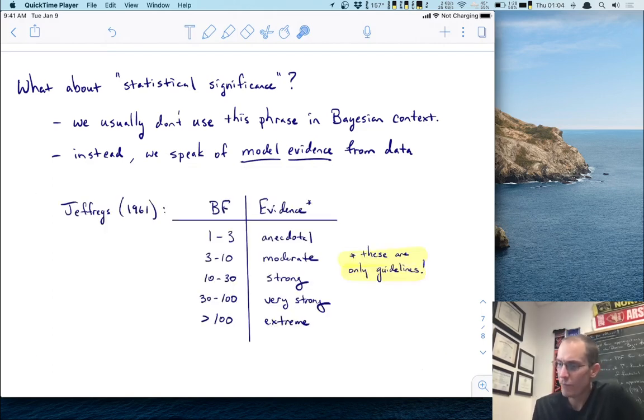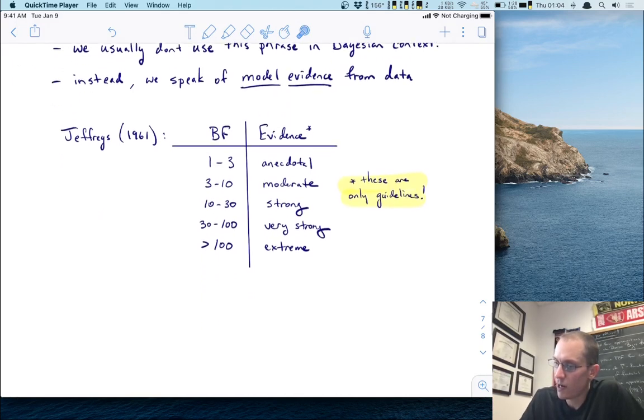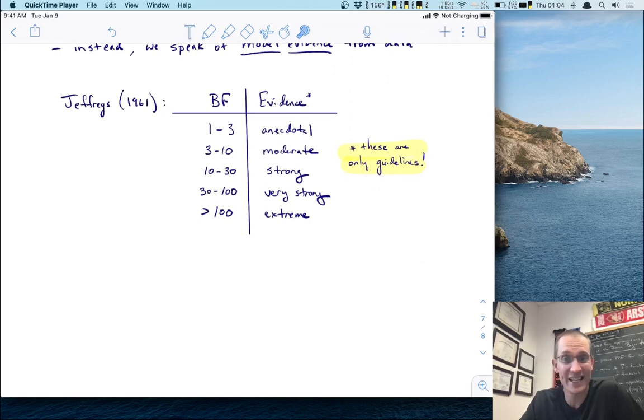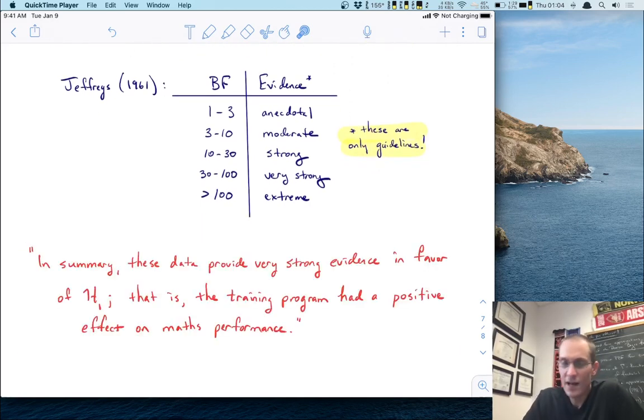First of all, we need some idea of how much evidence is enough. The classic sort of benchmark for evidence comes from Jeffries in 1961. He recommended these ranges. If you have a Bayes factor between 1 and 3, that's pretty much anecdotal evidence. 3 to 10, he calls moderate. 10 to 30 is strong and it goes up from there. You get above 10, you got good strong evidence for these models. So let's use these guidelines. I do mention these are only guidelines. They're not hard and fast. So what might we say here? We might say something like this. In summary, these data provide very strong evidence in favor of H1. That's because our Bayes factor was in there. That is, the training program had a positive effect on math performance. So I didn't use the word significant in there anywhere and I didn't need to. I think that's the fun part of this is writing up results in a way that does not use the phrases that we all grew up with.